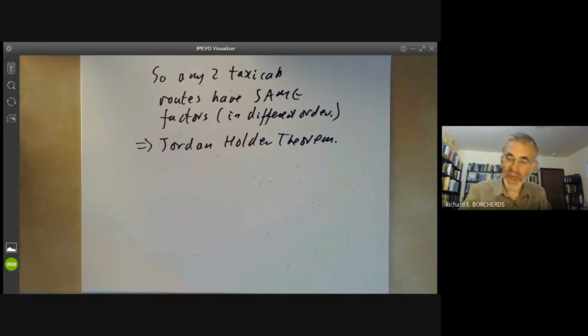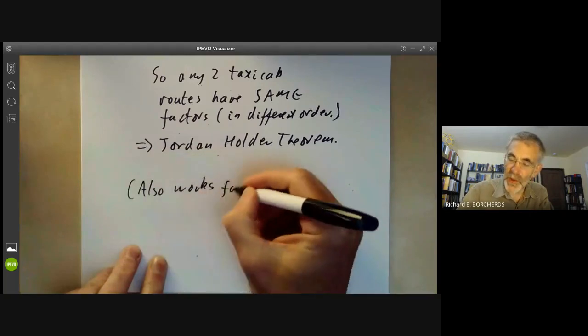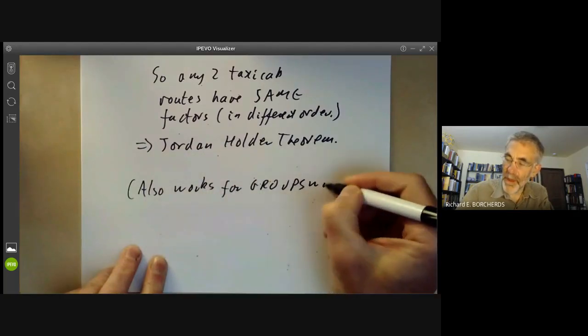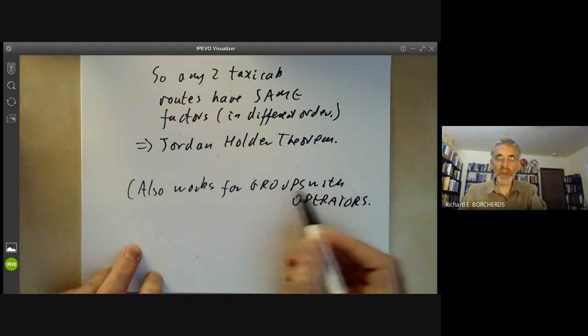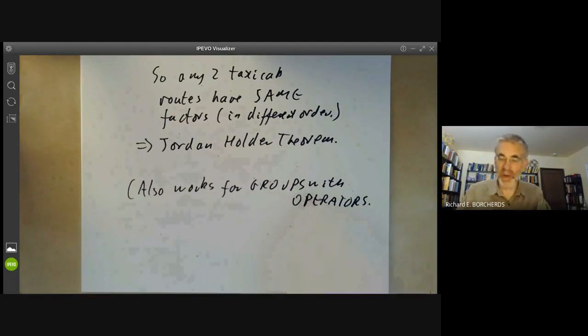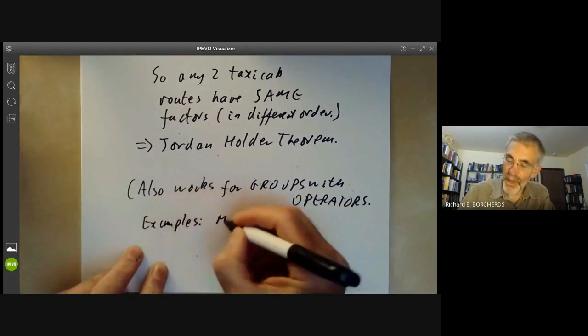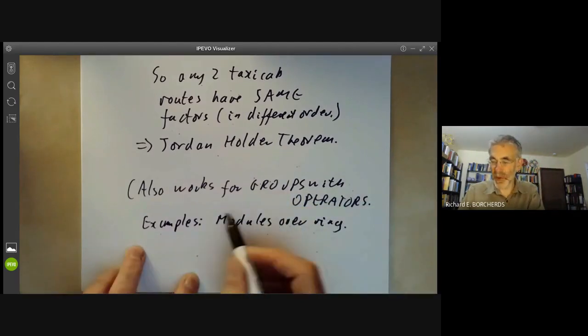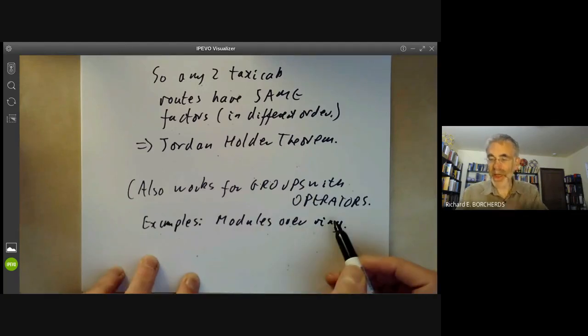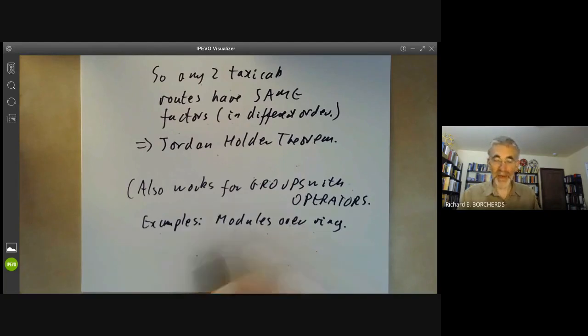So, by the way, this also works for groups with operators. That means it works for groups with some extra automorphisms on the groups. And the main example of this is modules over a ring. So we can think of a module over a ring as being a group with various operators. So what this says is if you've got a module over a ring, it can be broken up into simple modules and the number of times each simple module occurs is independent of how you break it up.